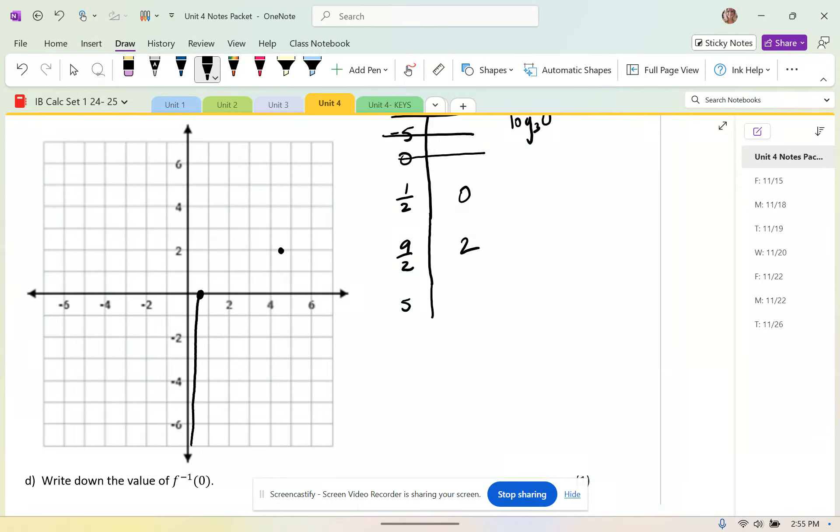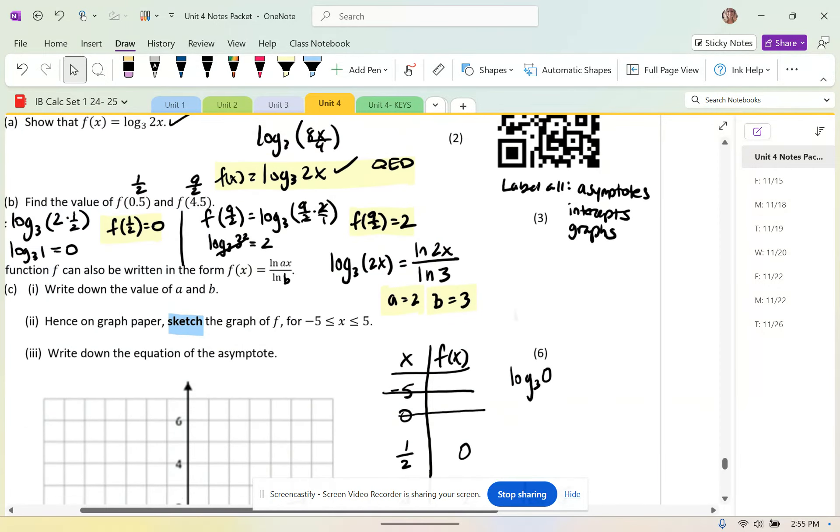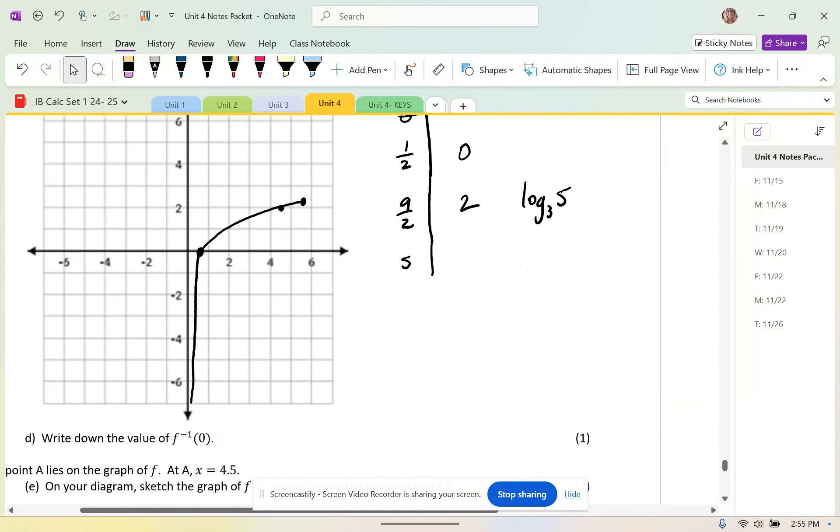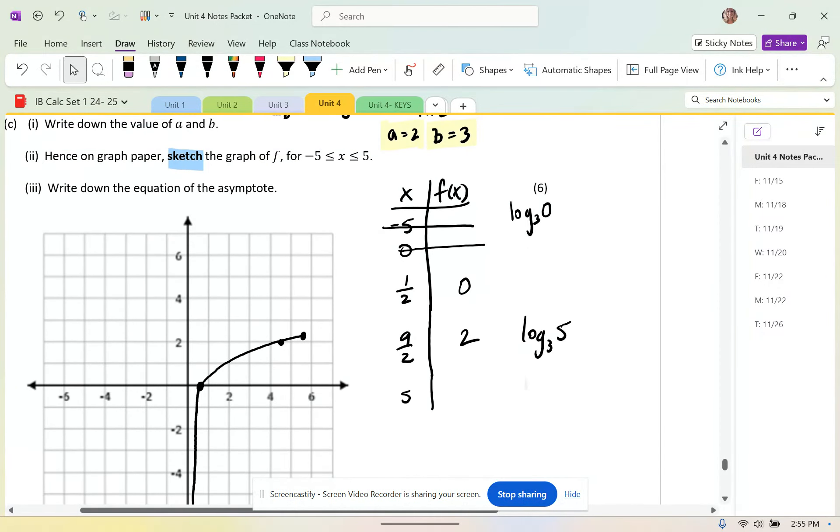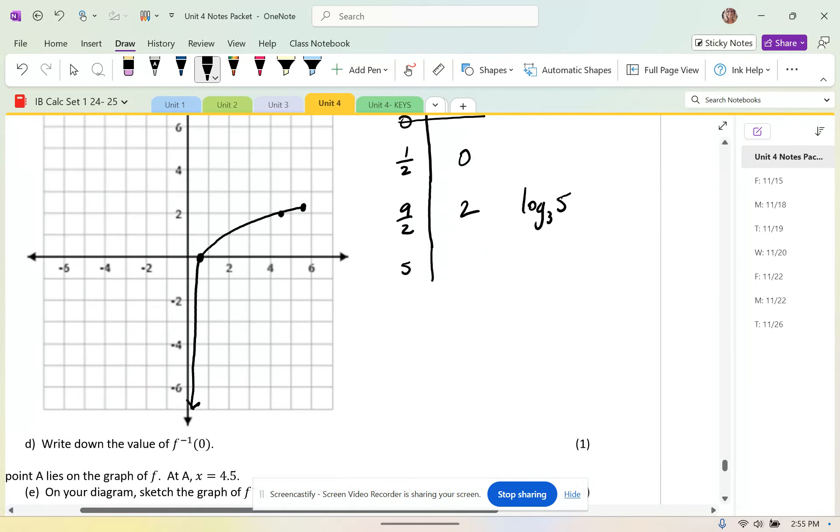And then at 5, what happens at 5? Let's see. Log base 3 of 5. That's probably just a little bit more than... So the graph ends at 5 with like a hard point. It's including 5. So I shouldn't have arrows on the end. I am going to have arrows on the end for the asymptote though.